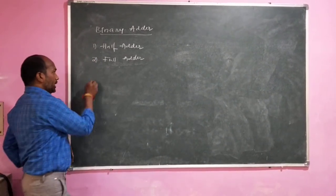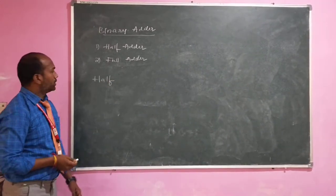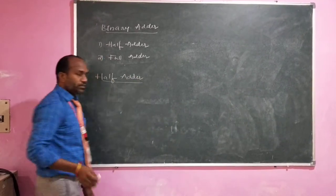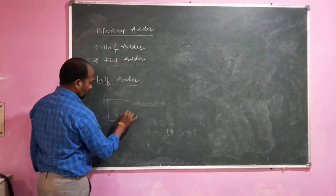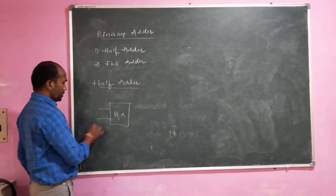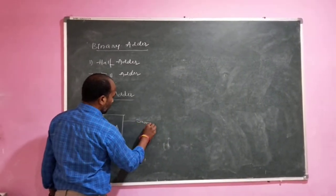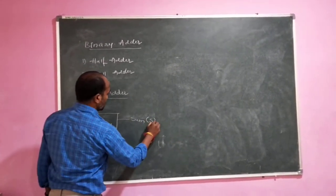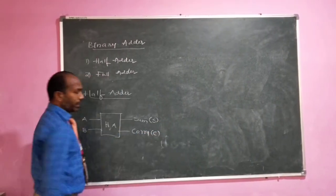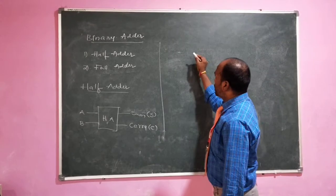Coming to the half adder — a half adder is a digital circuitry which comes under the category of combinational devices, which performs the addition of two digits. This is the block diagram we can use to represent a half adder. It takes two bits as inputs, let us say input A and input B.